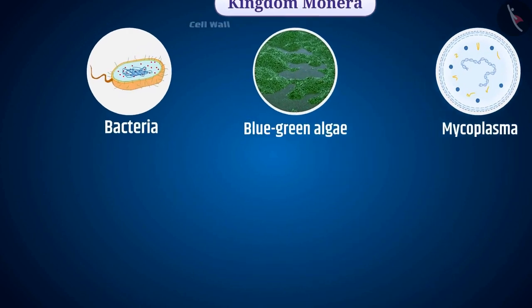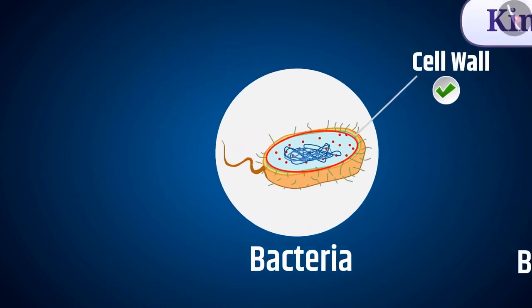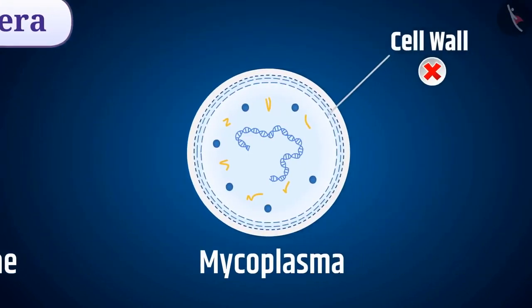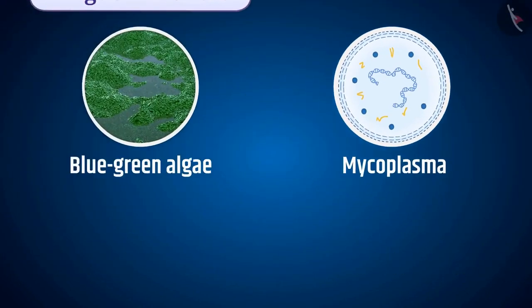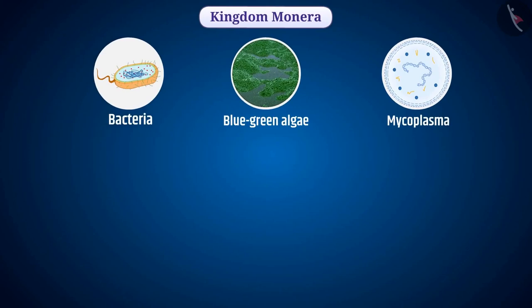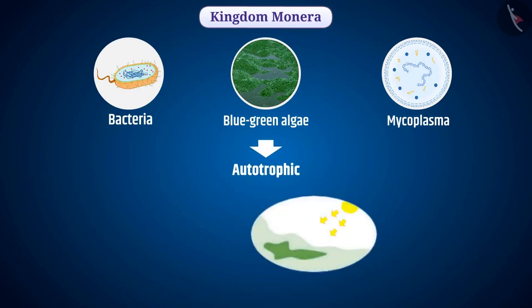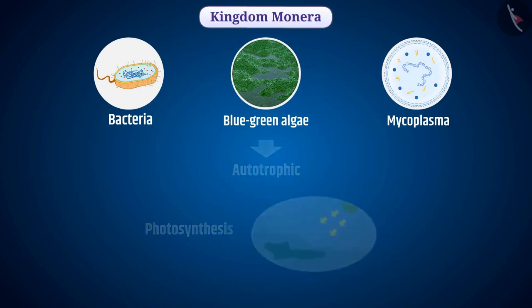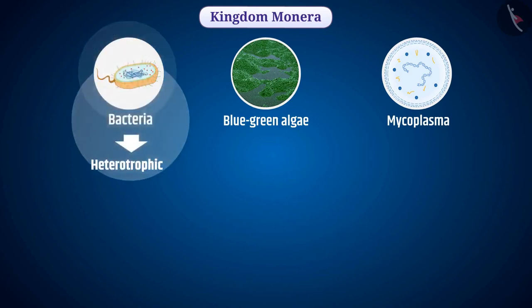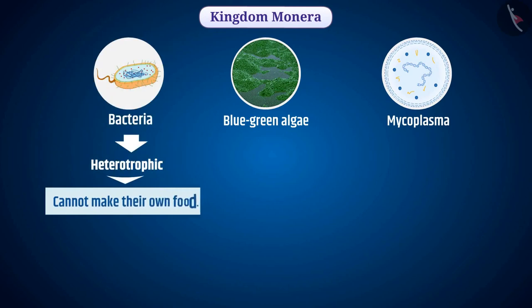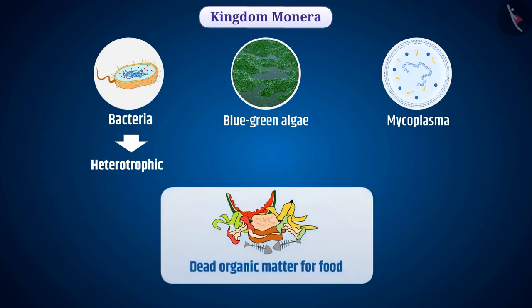Some of these organisms have a cell wall and some do not. Some creatures like blue-green algae are autotrophic — that is, they can make their own food by photosynthesis. Some organisms like bacteria are heterotrophic — that is, they cannot make their own food, and depend on other living organisms and dead organic matter for food.